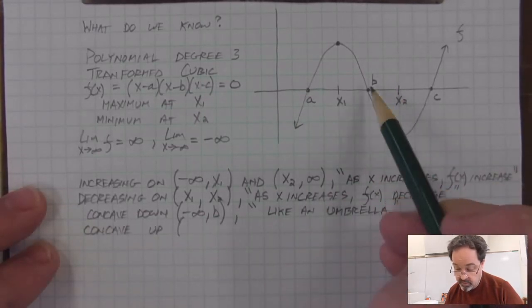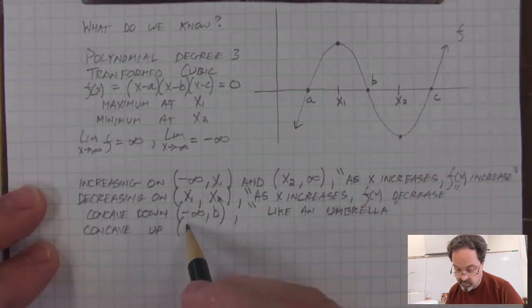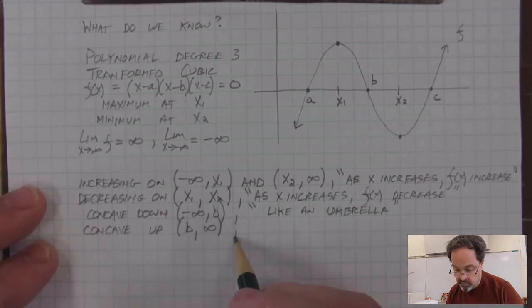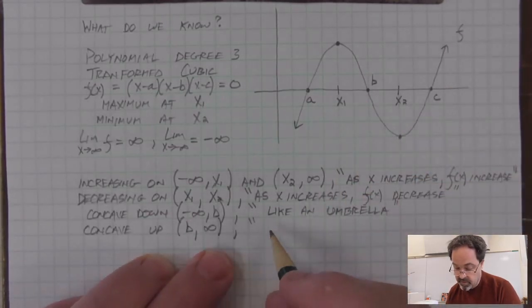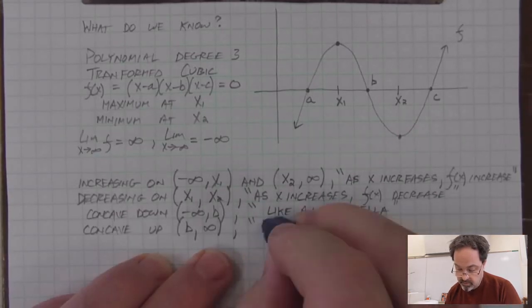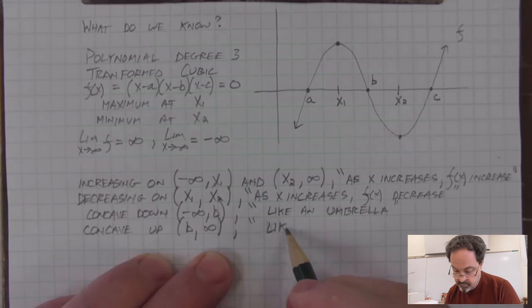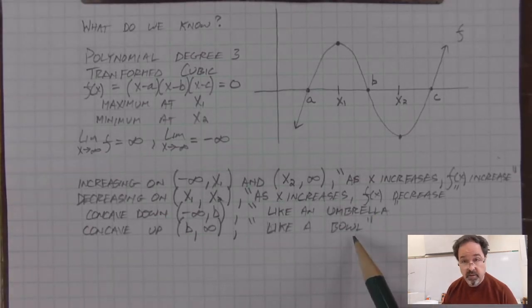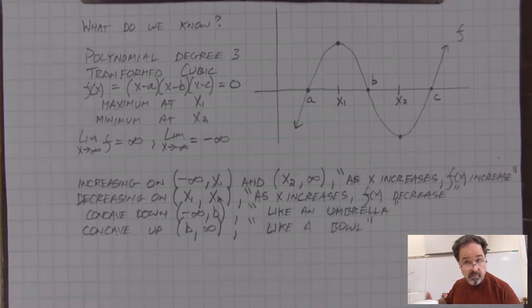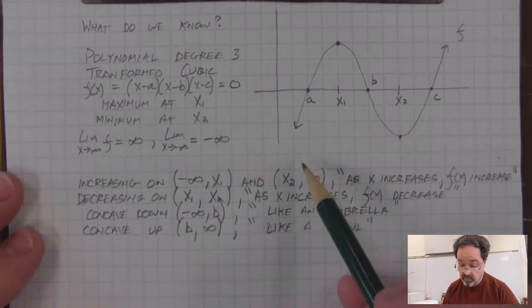The concavity changes at b. It goes from being concave down to concave up. So we could say it's concave up on the interval that starts at b. And then it's concave up ever afterwards, so it goes to infinity. And informally, we can think of a function being described as concave up as looking like a bowl. We begin with an understanding of concavity in these very informal ways because the formal justification for concavity is going to require some higher mathematics and calculus in order to prove and justify algebraically. We're not ready for that. But these are decent descriptions.